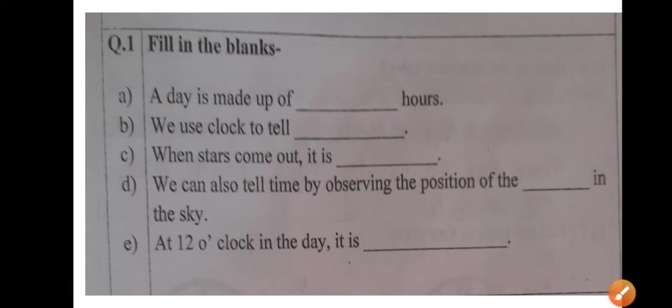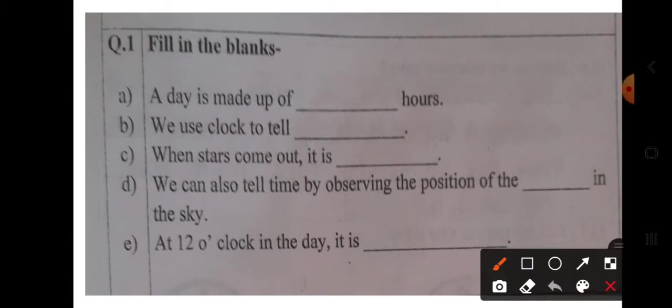Question number one, a day is made up of 24 hours. We use clock to tell time. When stars come out, it is night. We can also tell time by observing the position of the sun. At 12 o'clock in the day, it is noon.